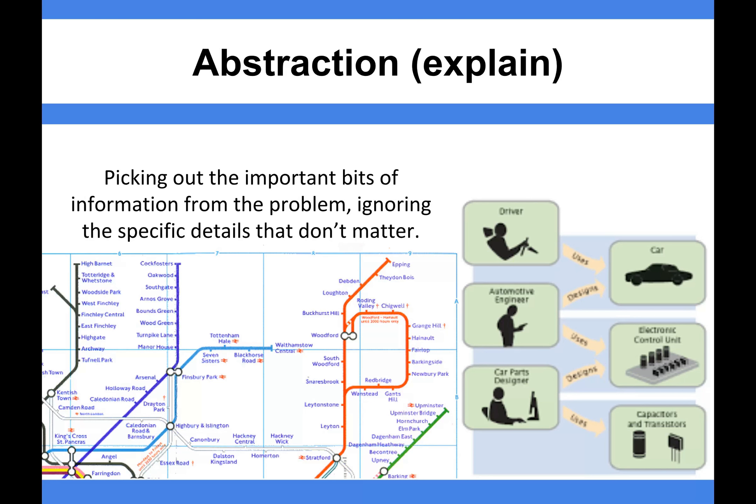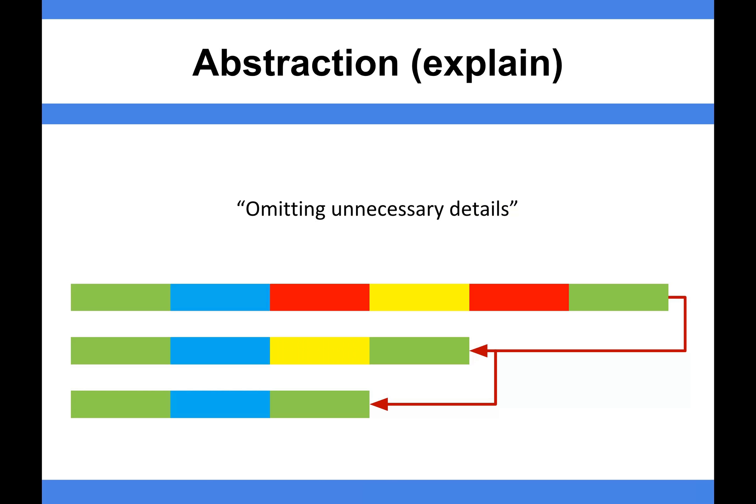They used abstraction to do it. So abstraction is the omitting of unnecessary detail. If you imagine we had here our problem that's got, I don't know, six different blocks of things, and we need to work out what we need to ignore. We could argue the bits in red are probably not that important—they're not actually part of my problem.